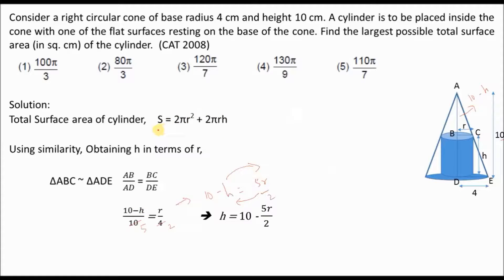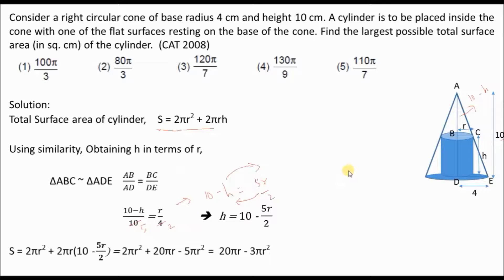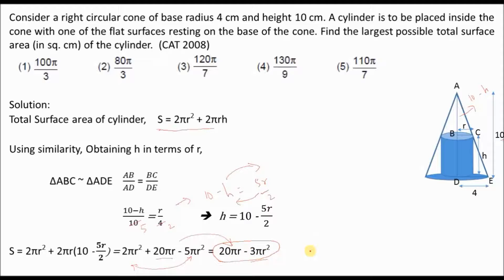Plugging the value of h into the surface area formula, I get S = 2πr² + 2πr(10 − 5r/2). Expanding: 2πr² plus 20πr minus 5πr². Combining 2πr² and −5πr² gives −3πr². So the final expression for surface area is S = 20πr − 3πr².